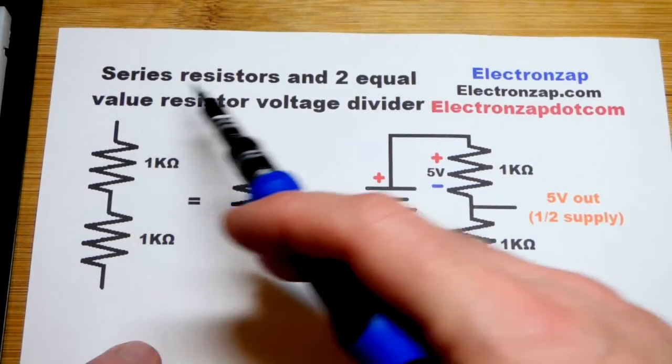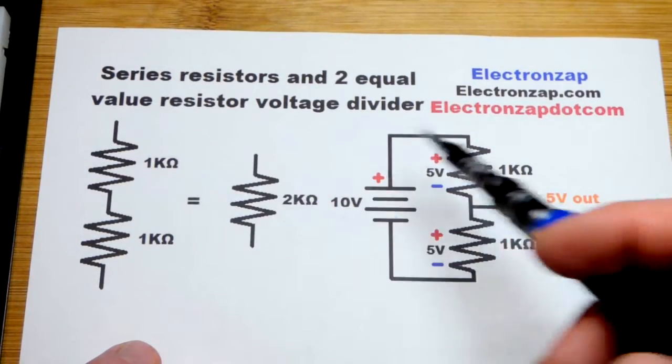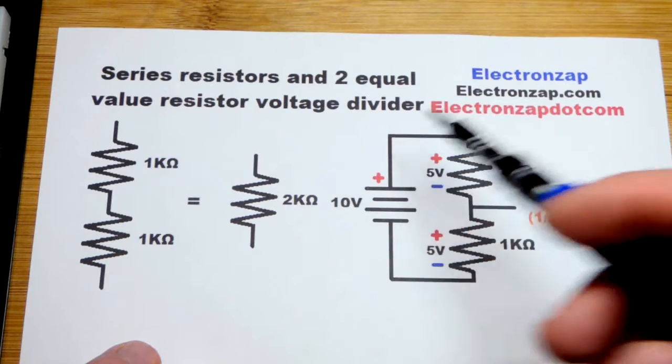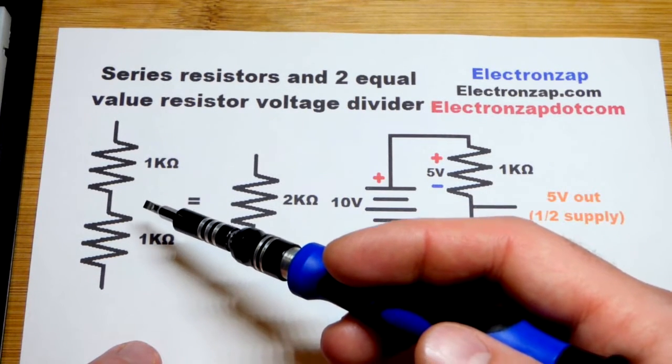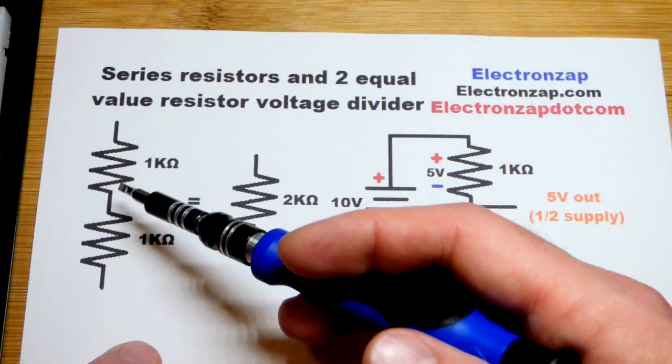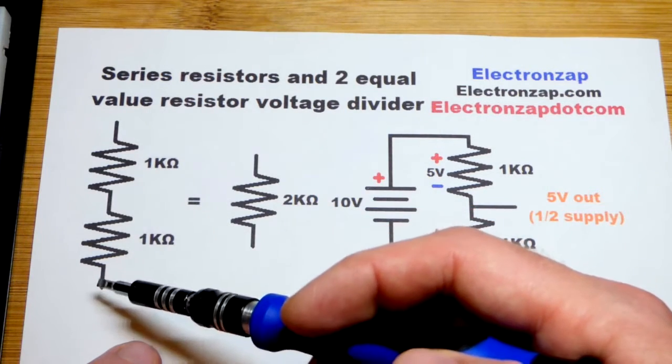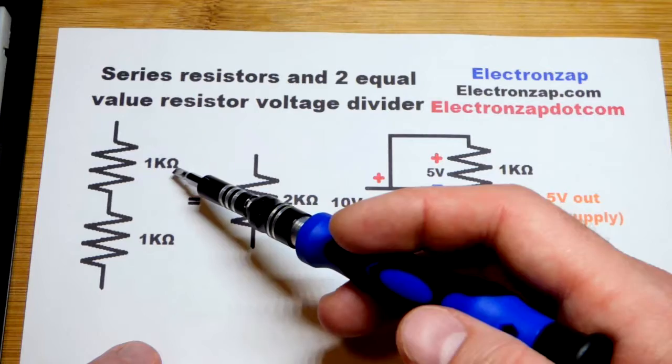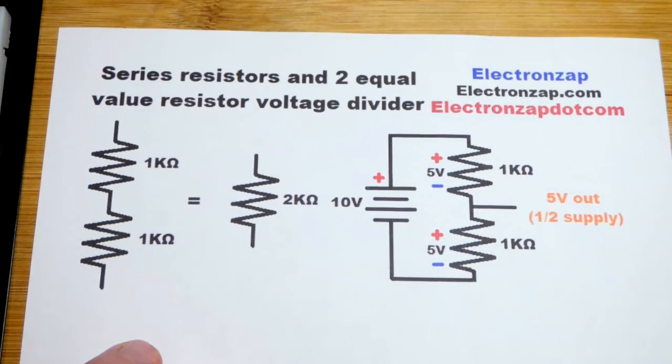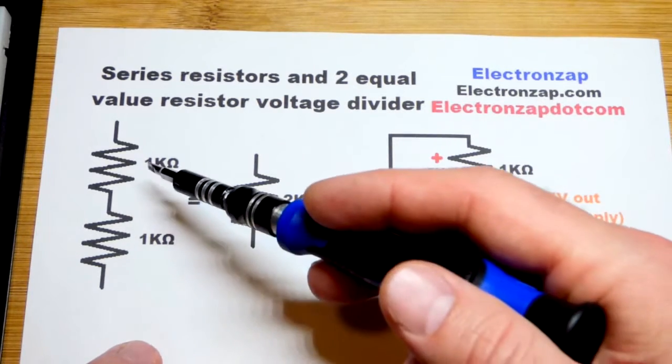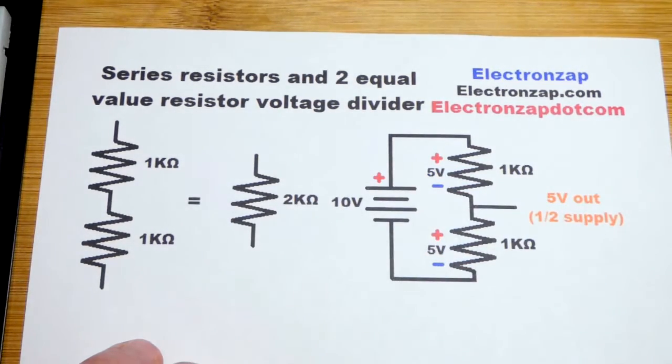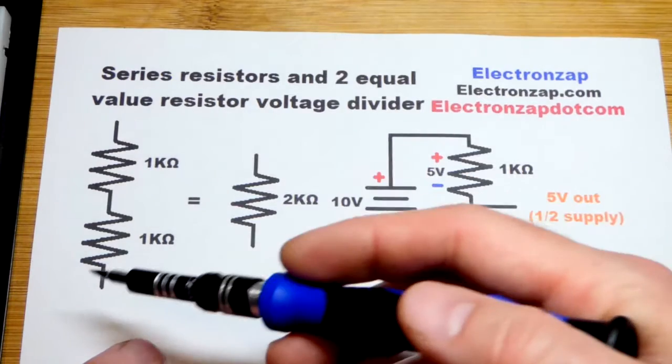In this video we're going to talk about series resistors and series resistance as a way to make a voltage divider. Here you can see a one kilo ohm resistor followed by another one kilo ohm resistor. One kilo ohm means 1,000 ohms, so you have a total resistance of 2,000 ohms. You just add the numbers up, it is that simple when it comes to series resistors.